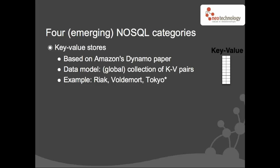The data model of the key-value store is that of a hash table. If you're a Python person, it's a dict — basically an associative array. You have keys, and those keys map to a value. That value may be compound content, but from the point of view of the key-value store, it's opaque. Example implementations are Riak, Project Voldemort out of LinkedIn, and Tokyo Cabinet and Tokyo Tyrant.